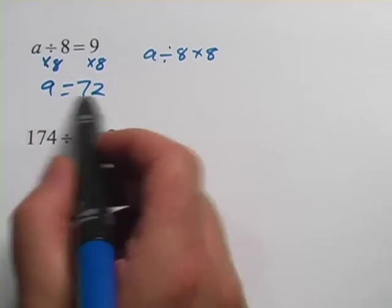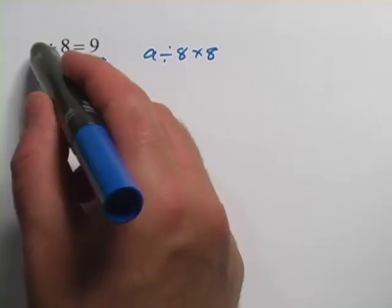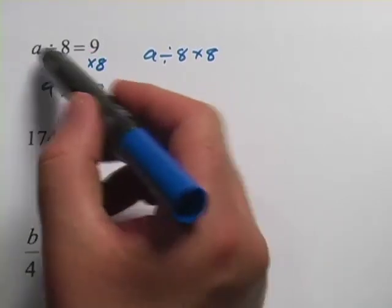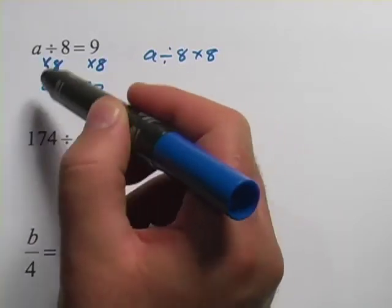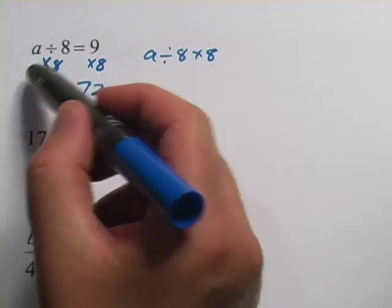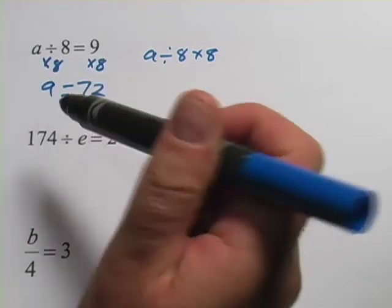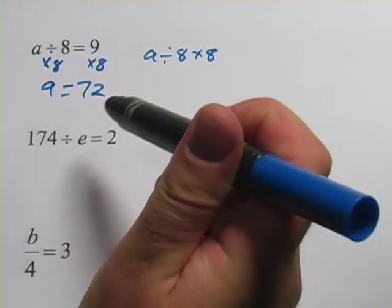Now if you want to check to see if that's really the right answer, you can put it in for a. You can say instead of a divided by 8, you can say 72 divided by 8 is 9. And maybe just looking at this problem, you did it that way. You said, what divided by 8 is 9 and you just knew it was 72? If you did, good for you.